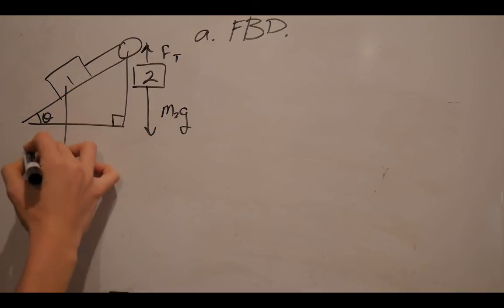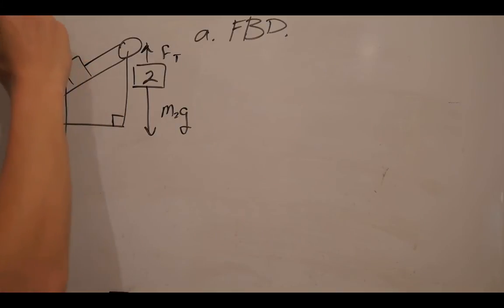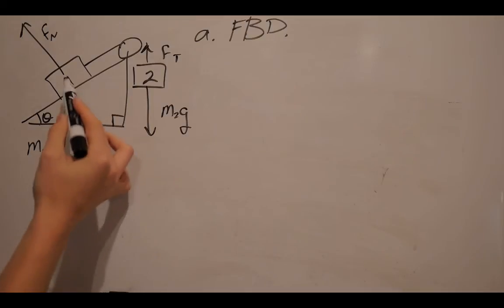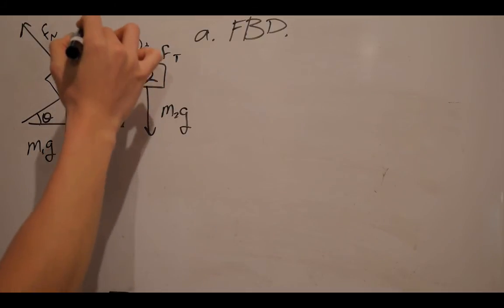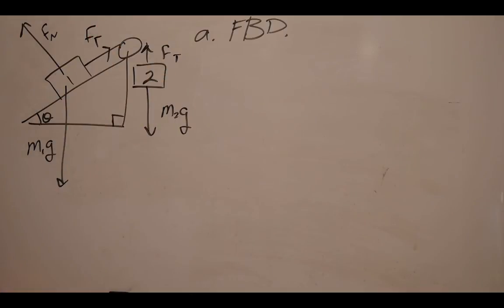I'm going to do the weight of block one and the normal force of block one. Remember, normal force should be 90 degrees with the surface. And last but not least, I'm going to draw the force of tension pulling up block one. So that's my free body diagram for this scenario.